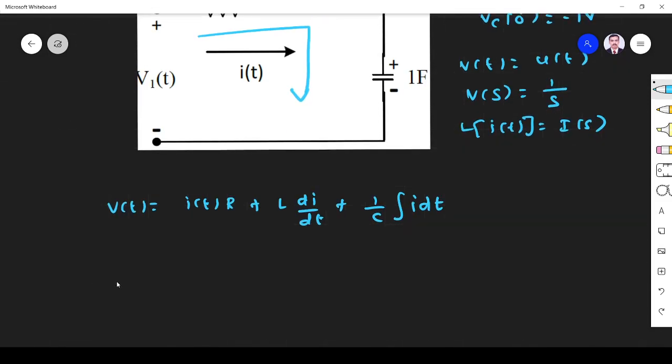So I take Laplace transform: I(s)R + L[sI(s) - I(0)] + (1/C)[I(s)/s + V(0)/s]. V(0)/s. Okay. What they have done? V(s). V(s) we found it is 1/s.